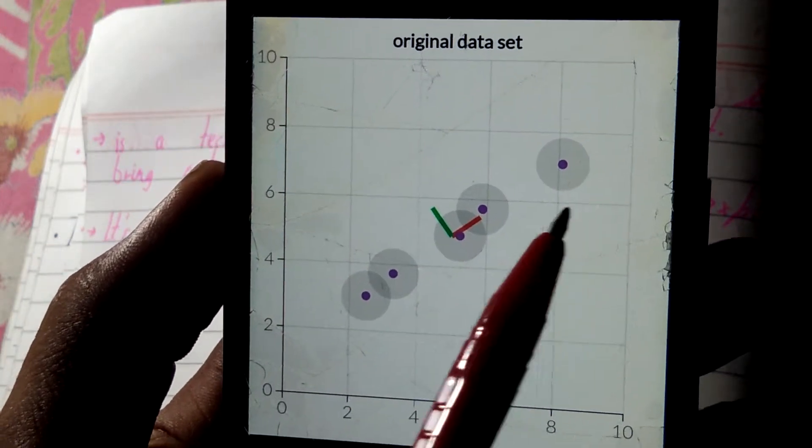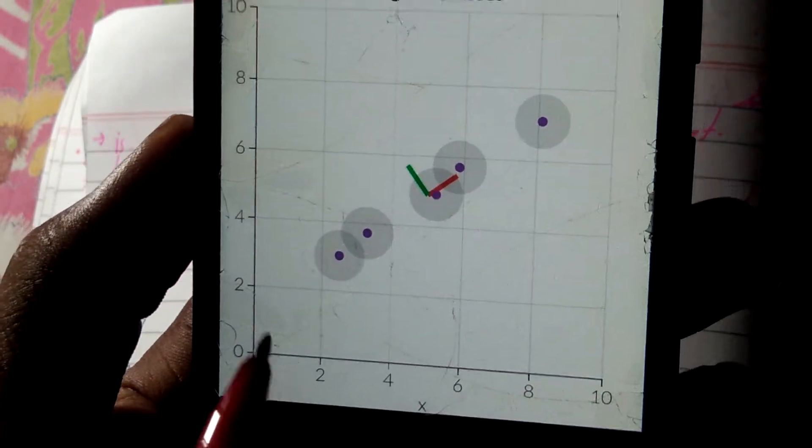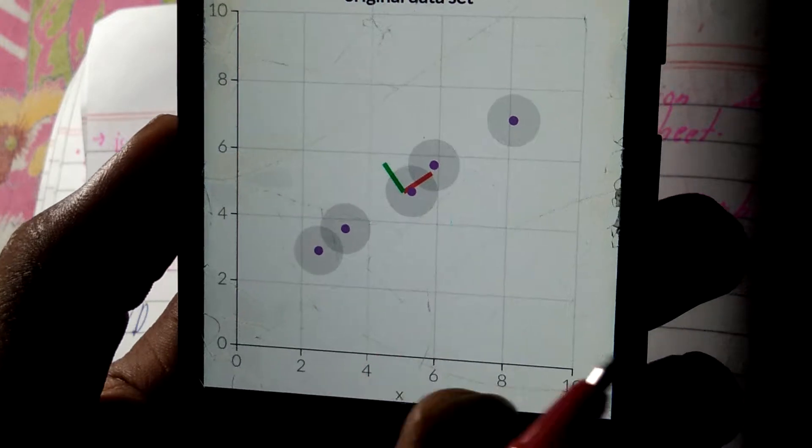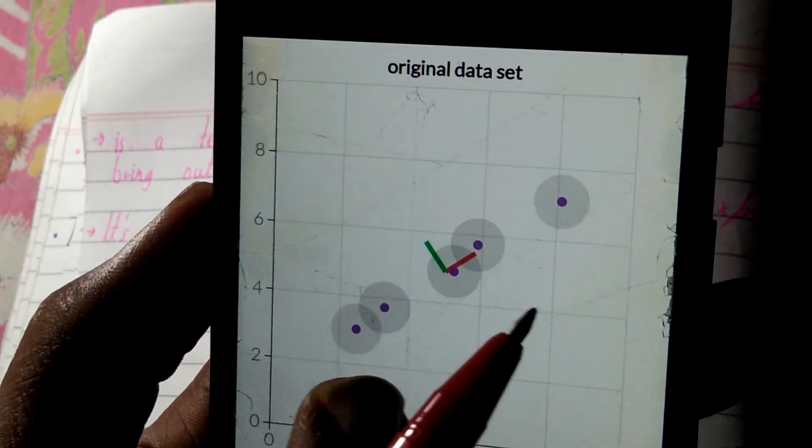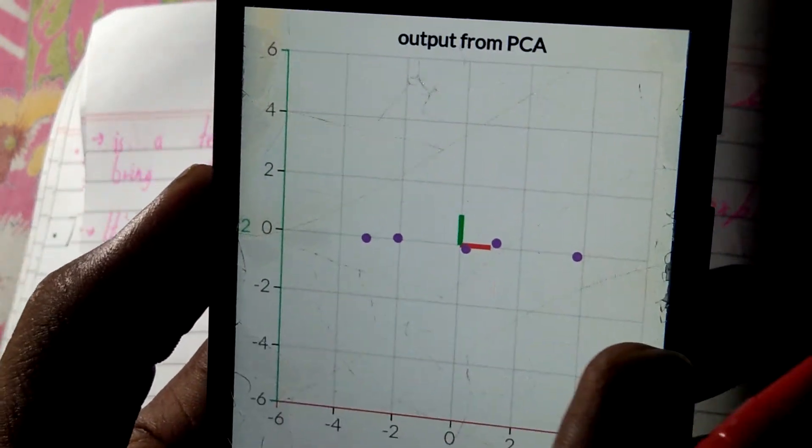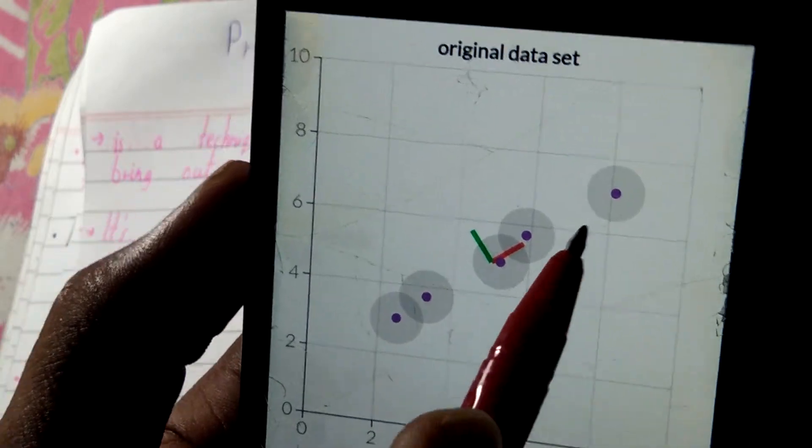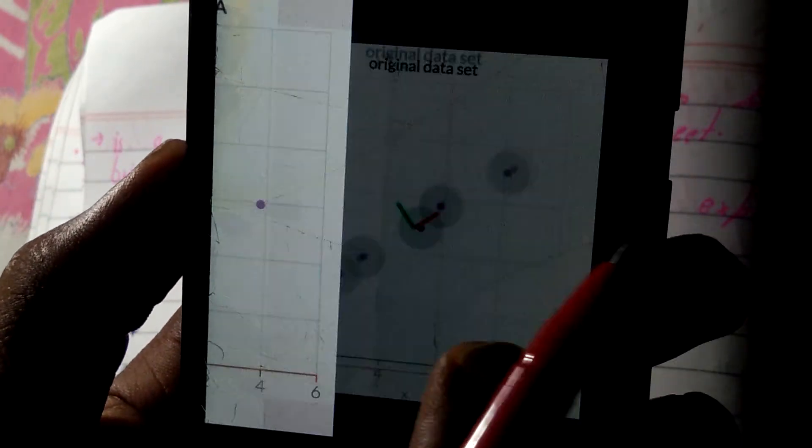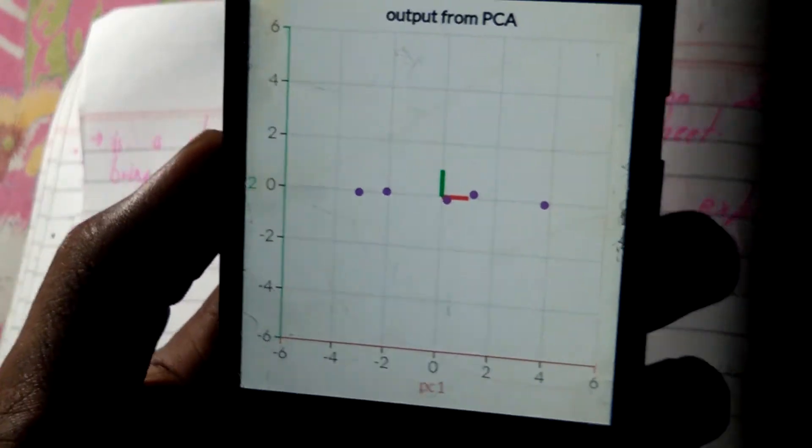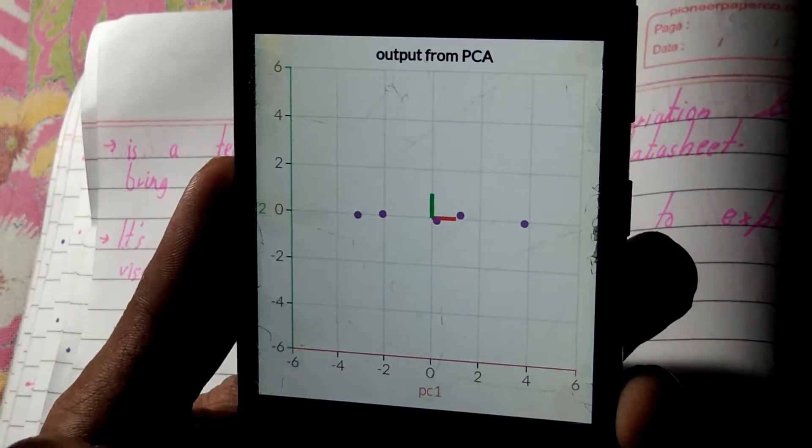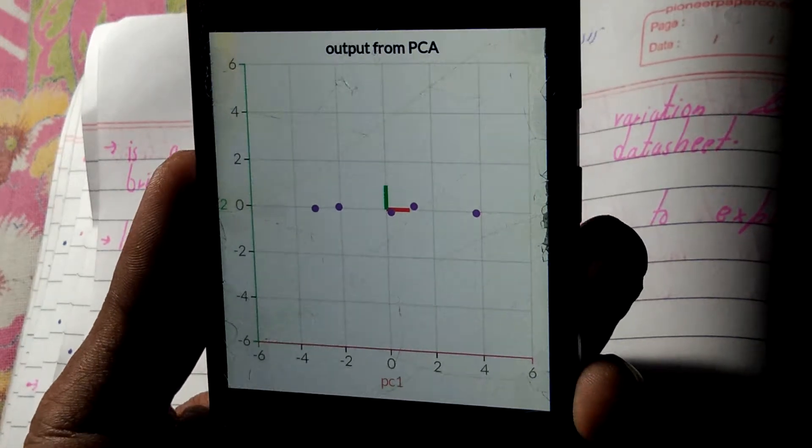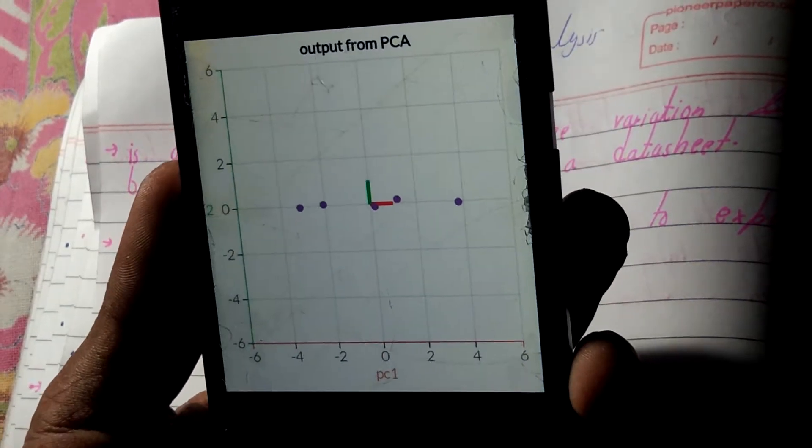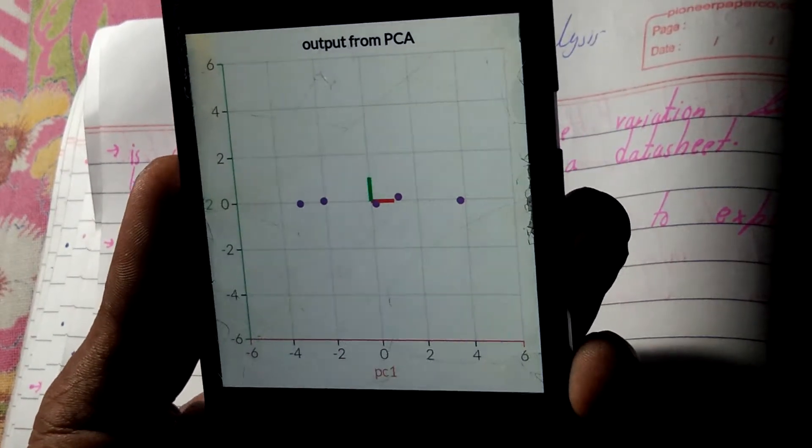These are data points we are having and this is the basic layout. Then if we use principal component analysis on it, it will become like this. We just change the orientation. You can see that it is multi-dimensional, right? We just convert it into a one-dimensional view so that we can analyze it on the same line or same aspect. It gives us a better view.